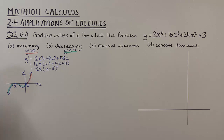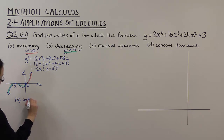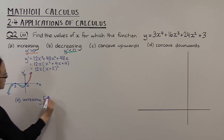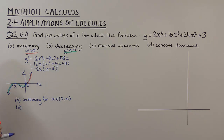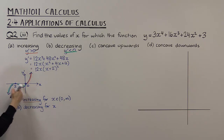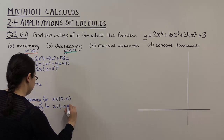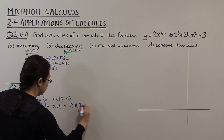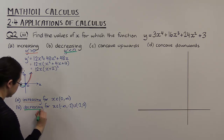So now we can conclude for part a. The function is increasing for x greater than zero, which we write as x in (0, ∞). That's the orange section. It's decreasing for x less than zero but not including minus 2, which we write as x in (−∞, −2) union (−2, 0). That's the green section where the function is decreasing.